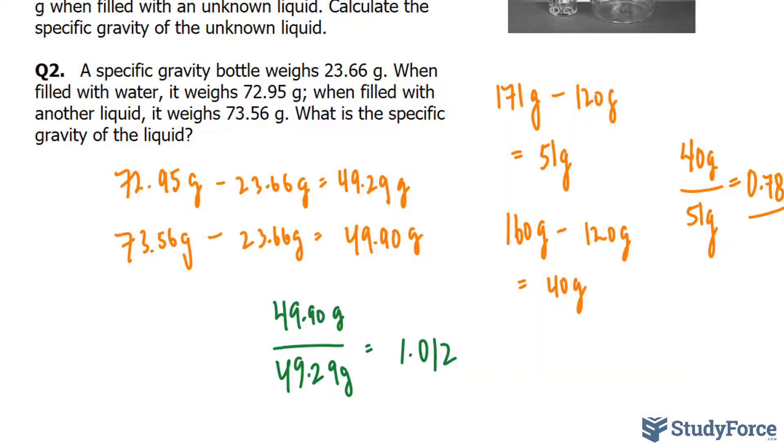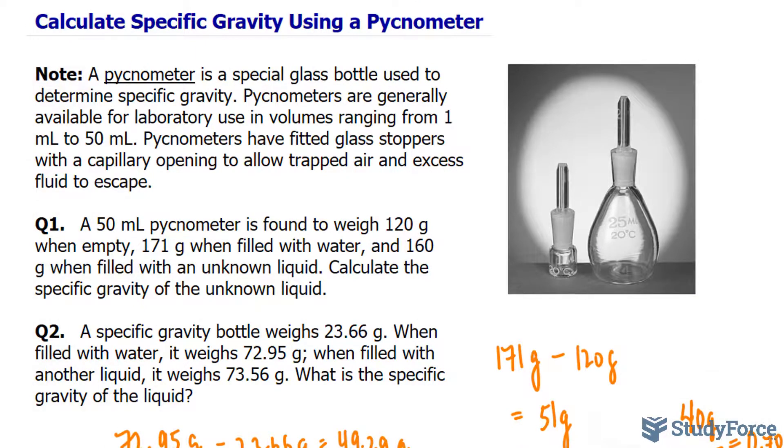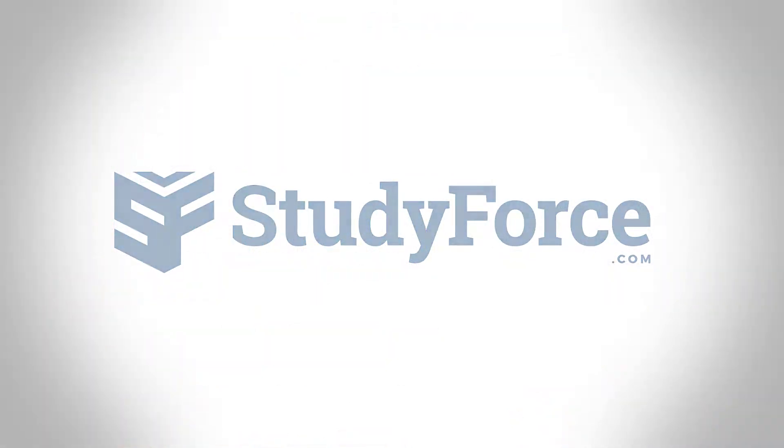Given that this value is greater than 1, expect it to be heavier than water. And there you have it. Two quick examples on how to calculate specific gravity using a pycnometer.